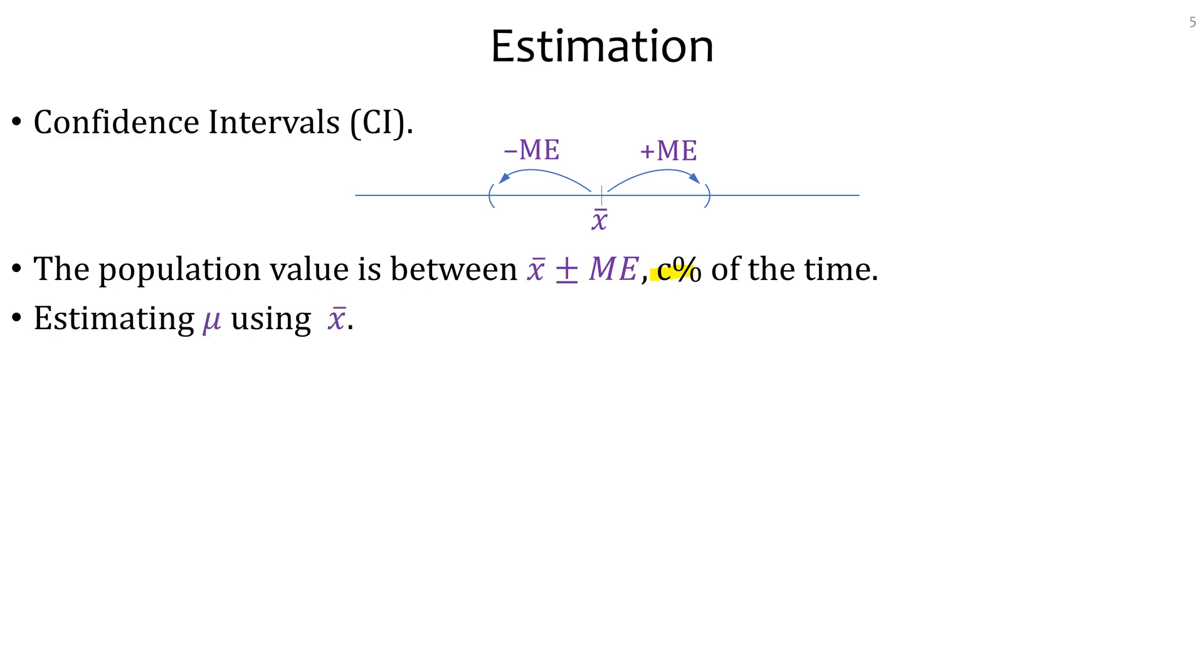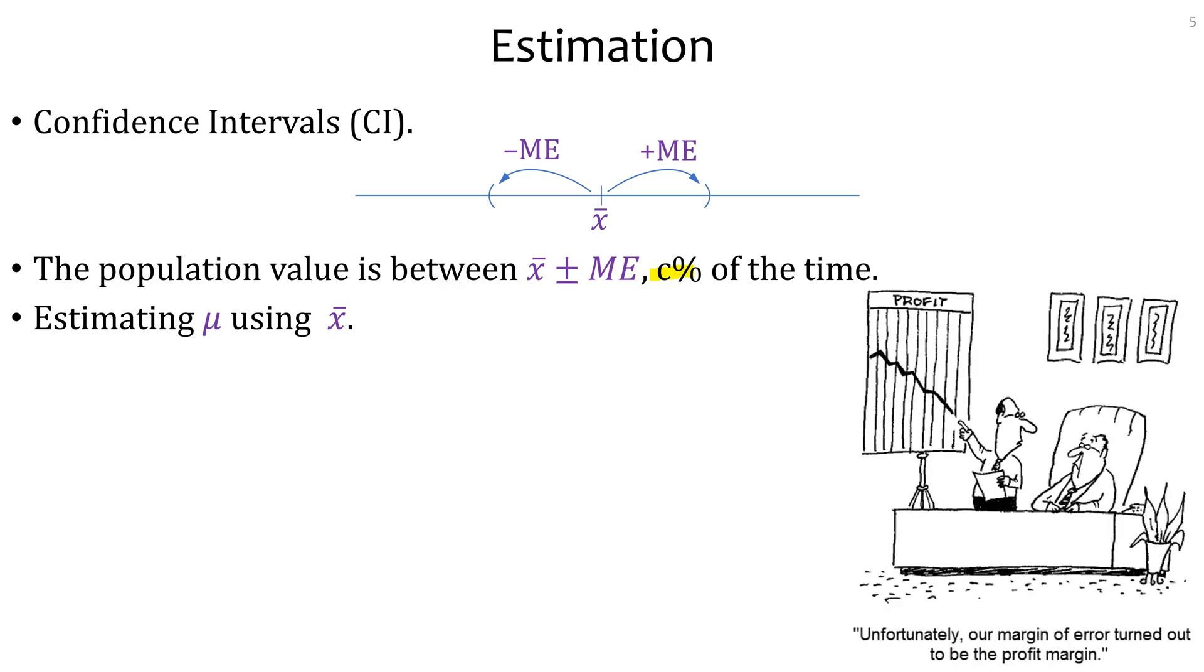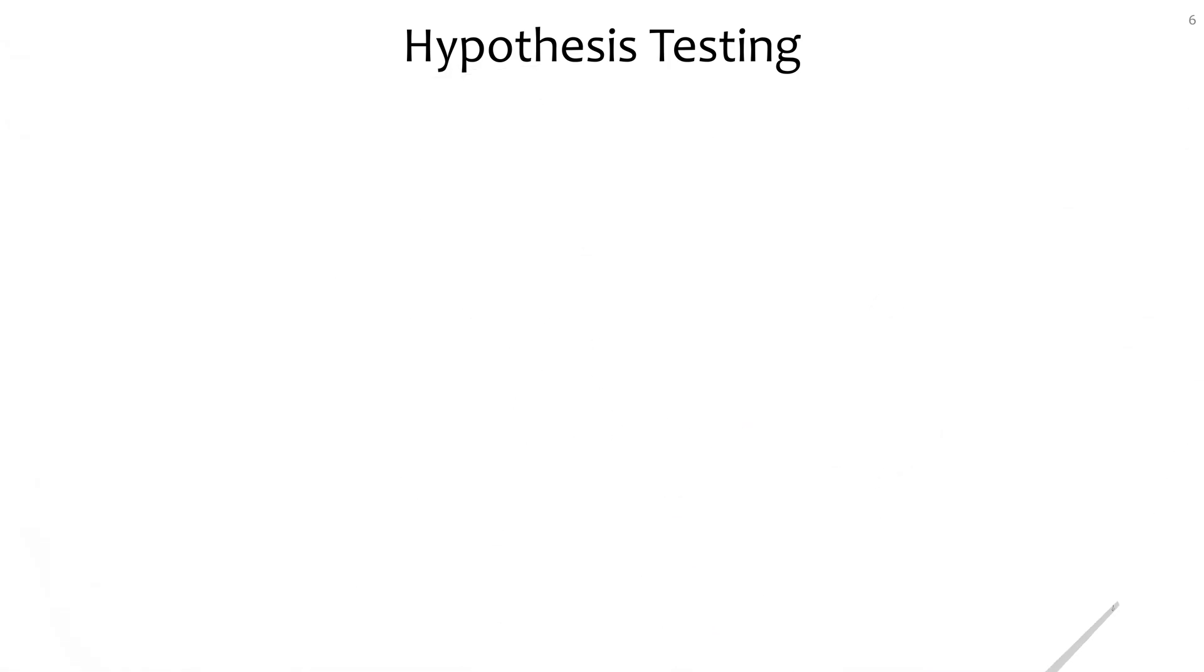What you could say more or less is that we can be sure 95% of the time that if we repeat this study, the actual value, the population value is going to be within this range. The population value is more or less the same as the truth. Here we are trying to estimate the population mean using the sample mean. Hopefully that doesn't turn out to be your profit margin. That was scary.